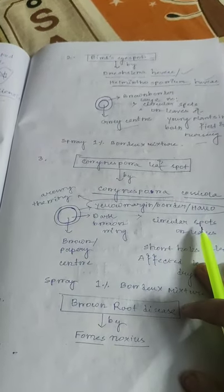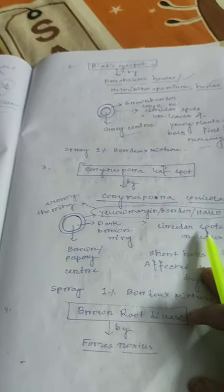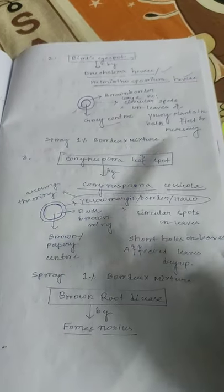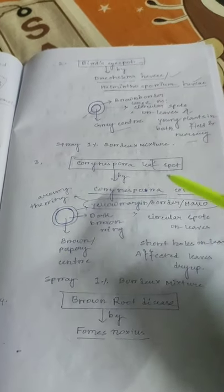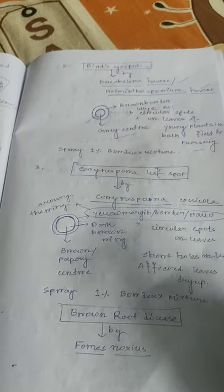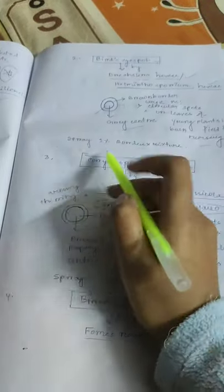Bird's eye spot of rubber is caused by Helminthosporium heveae or Drechslera heveae. Circular spots are found on leaves of young plants in both field and nursery. The spots have a brown border with a grey center, and large numbers of circular spots may appear. Control is by spraying 1% Bordeaux mixture.